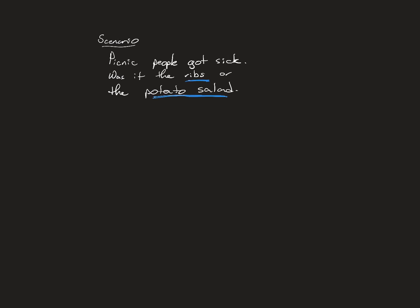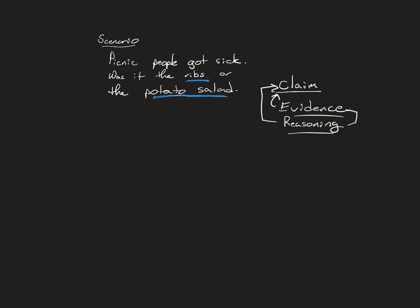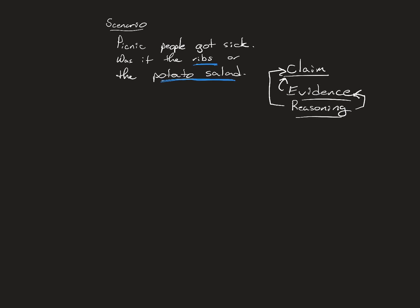I'm going to be looking for a claim — something you're going to say. You're going to have evidence. I'm looking for evidence that supports the claim, and reasoning. You have to have all three. They have to flow. Whatever your claim is, your evidence must support the claim. Whatever your reasoning, it has to be related to the claim and the evidence. If you don't have the three working together to prove your point, then you've failed the assignment.